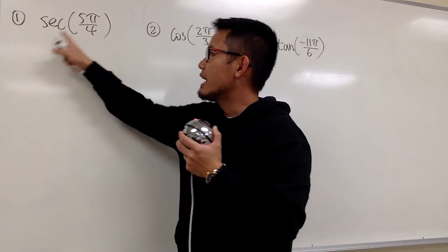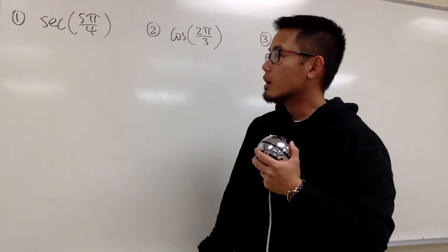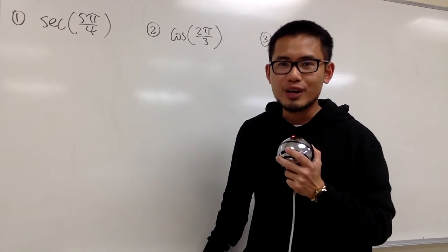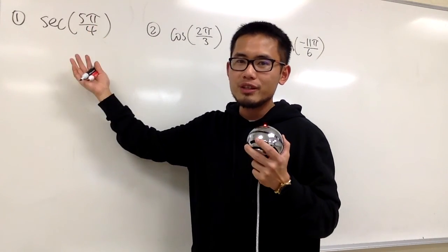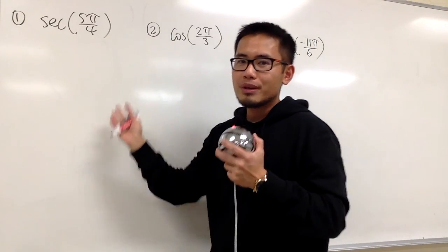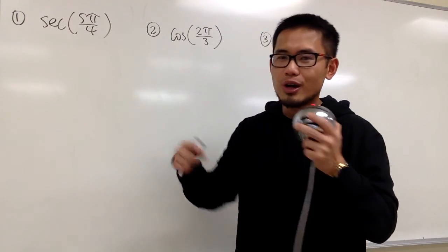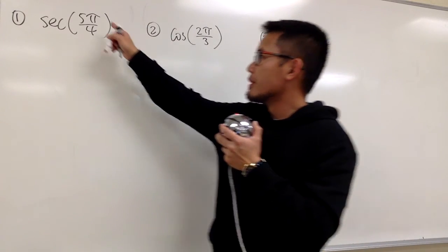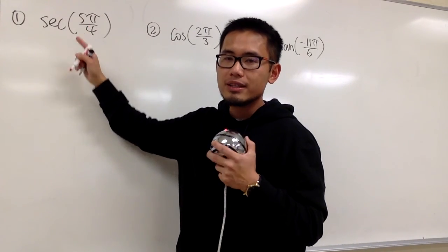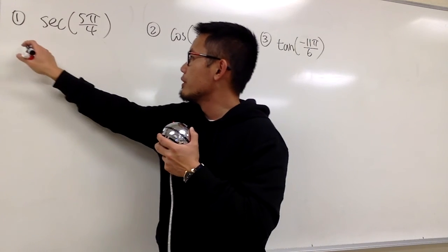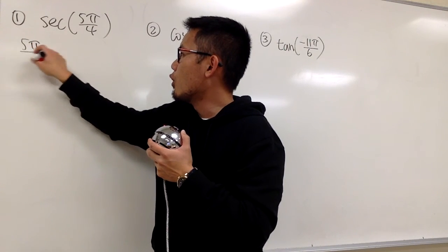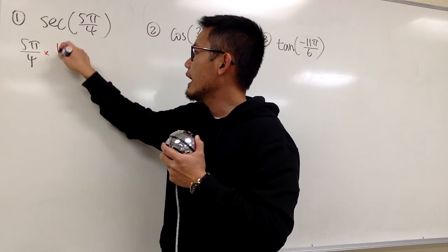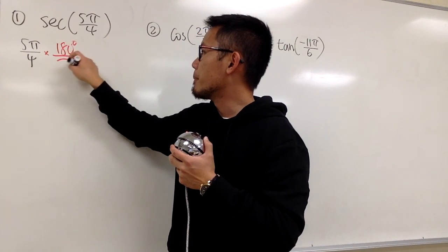First one: we have sec(5π/4). In order for me to come up with the picture for the reference triangle, this is 5π/4 in radians. A good strategy is to convert the radians into degrees first. So let me put down 5π/4 radians and multiply by 180 degrees over π.